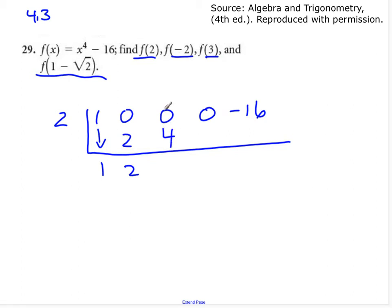Multiply, that's 4, add, 4. 4 times 2 is 8, add, that's 8. 8 times 2 is 16, add, and you get 0.